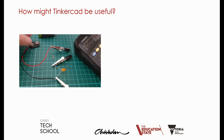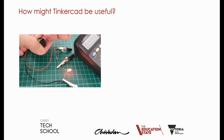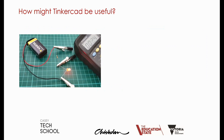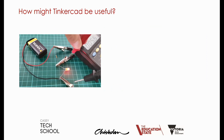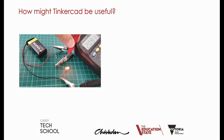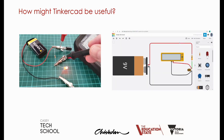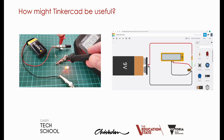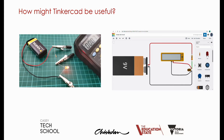How might it be useful? If we look at this little video on the left, we can see a real circuit being built using a 9-volt battery, a resistor — that little component with colored bands on it — which is to limit current going to an orange LED. We're using a real multimeter to measure the voltage across the LED. On the right, this is the same circuit being built using Tinkercad circuits. We've connected up a 9-volt battery, a resistor and an LED, and a multimeter. We can use a simulation to turn that multimeter on and measure the voltage across that LED.